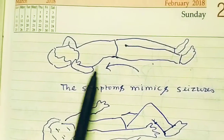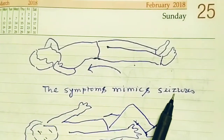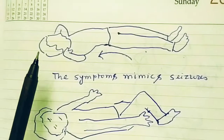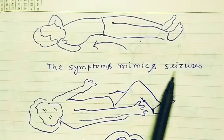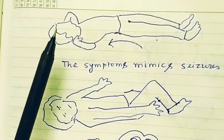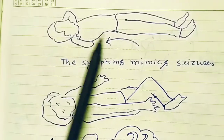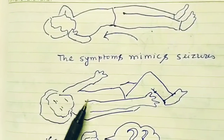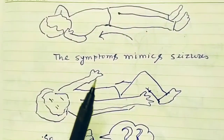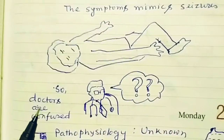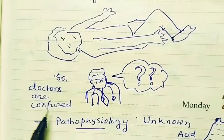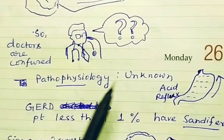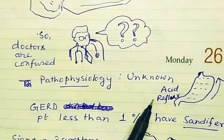The symptoms mimic seizure activity — this was a NEET PG and PGI exam question. Sandifer Syndrome mimics seizure activity; it looks like a seizure is occurring. The abnormal movements occur after the child takes food. After eating, the child gets this seizure-like activity, which is why doctors can be confused. The pathophysiology is essentially unknown — it is thought that GERD may play a role, but the exact pathophysiology is idiopathic.